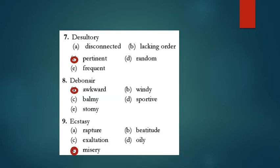Desultory means lacking plan or purpose, purposeless. The word pertinent means apt, suitable, so that's the opposite word. Debonair means very stylish, very confident, cultured, so awkward will be the opposite word. Ecstasy means great happiness. Rapture also means joy. Remaining all words are positive, but only one word, misery, is negative. The opposite word of ecstasy will be misery.